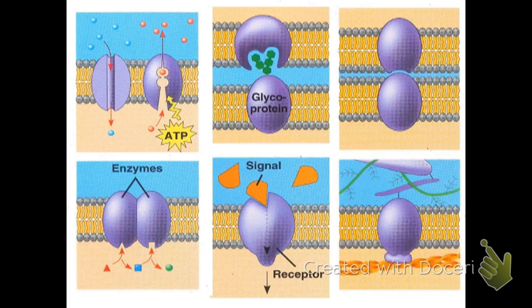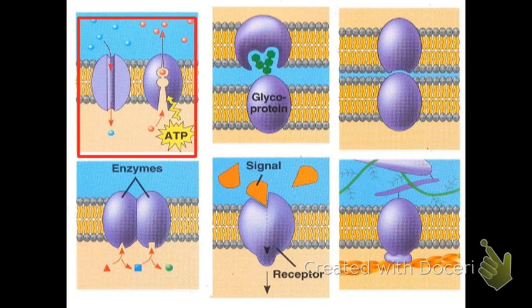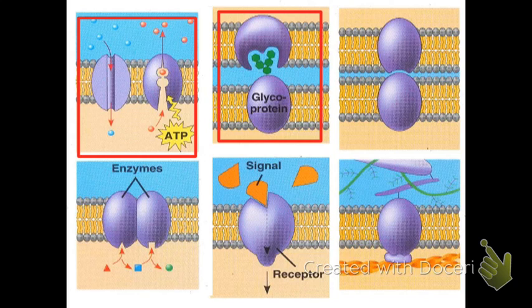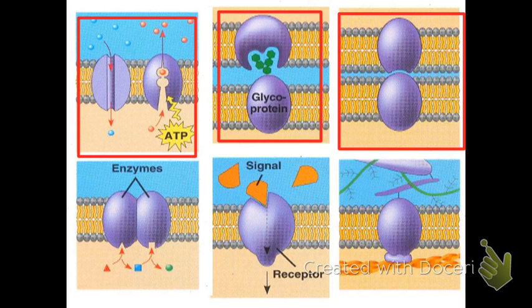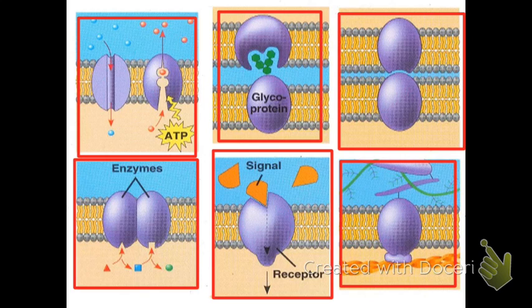Once proteins are in the cell membrane, they can do many tasks. Here, you see them transporting molecules. They are acting as cell recognition molecules, the glycoprotein there. They can be intracellular joints. Like all the junctions I showed you, they can act as enzymes.